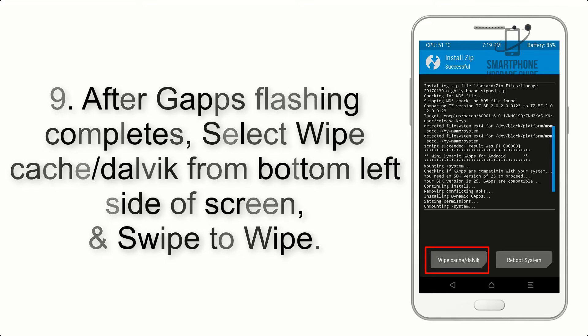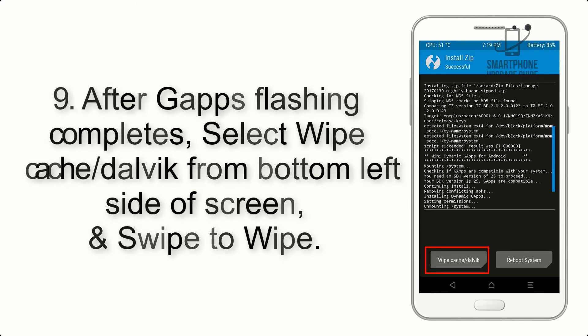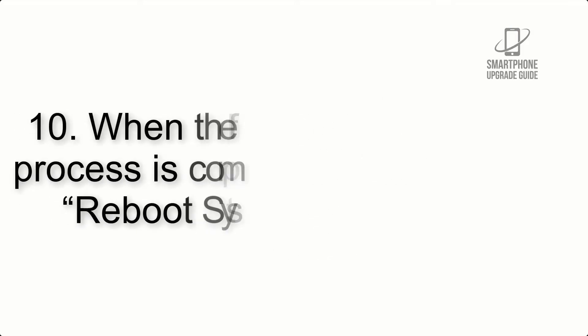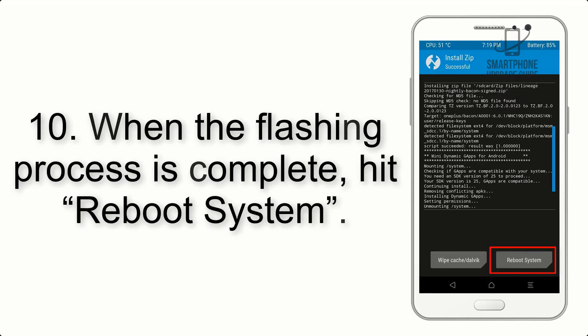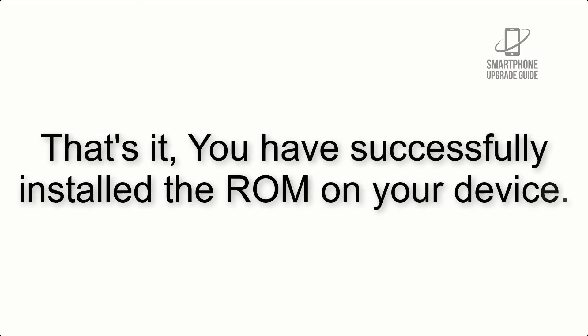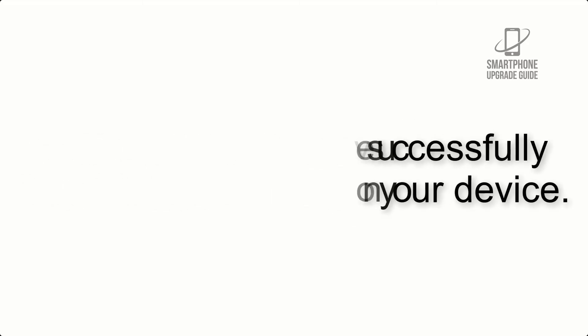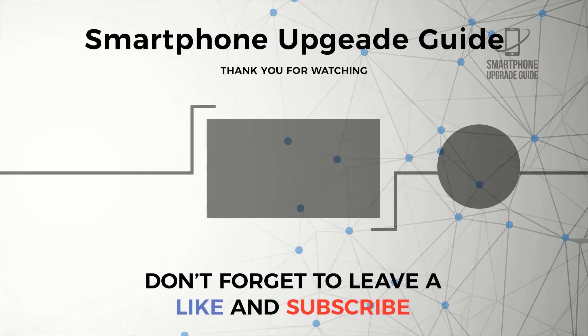Step 9: After GApps flashing completes, select Wipe Cache and Dalvik from the bottom left side of the screen and swipe to wipe. Step 10: When the flashing process is complete, hit Reboot System. That's it — you have successfully installed the ROM on your device.